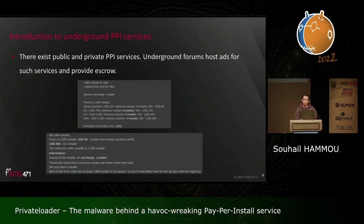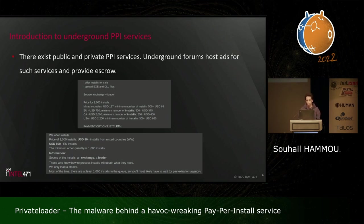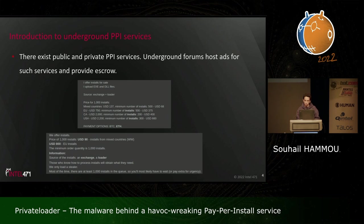There are multiple public and private install services. Public ones are accessible through the ClearNet or DarkNet — for example, InstallShop and InstallBest. Usually you just create an account, deposit some cryptocurrency into a wallet, and start providing URLs and payloads. There are also private advertisements in underground forums where individuals offer these services, with escrow services to ensure proper transactions. Prices range from cheap to expensive depending on certain constraints.